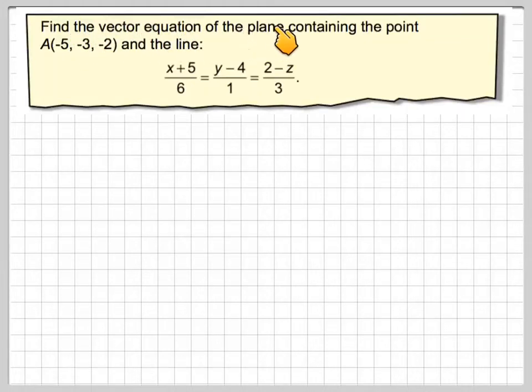Find the vector equation of a plane containing the point A minus 5, minus 3, minus 2, and the line x plus 5 divided by 6 is equal to y minus 4 divided by 1, 2 minus x divided by 3.